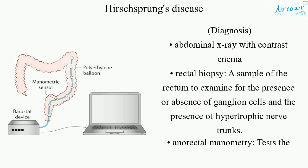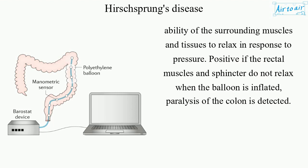Anorectal manometry tests the ability of the surrounding muscles and tissues to relax in response to pressure. The result is positive if the rectal muscles and sphincter do not relax when the balloon is inflated, indicating paralysis of the colon.